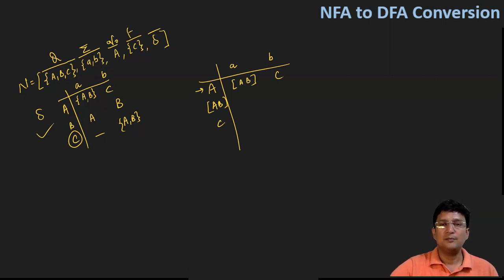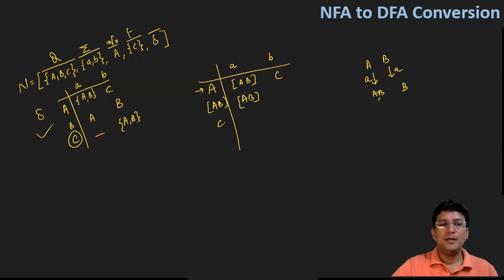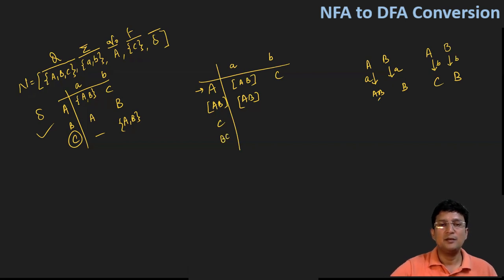Now AB on small a: referring to the NFA transition table, A on a goes to AB and B on small a goes to B. The union of these two is AB. Now AB on getting symbol small b goes to B, and we also get C, so we create a new state BC.